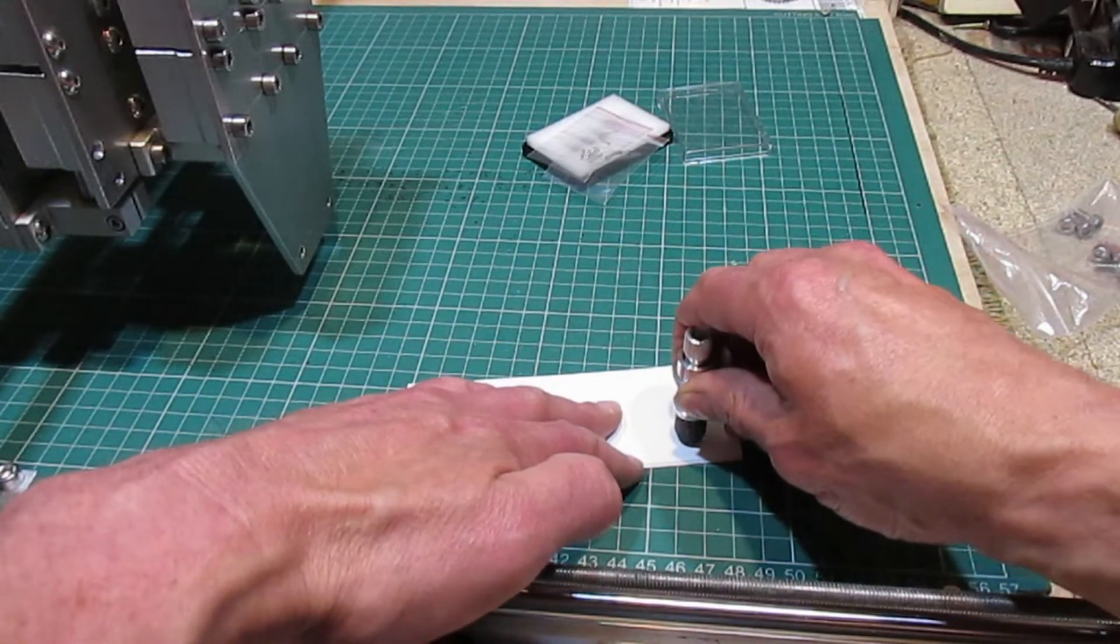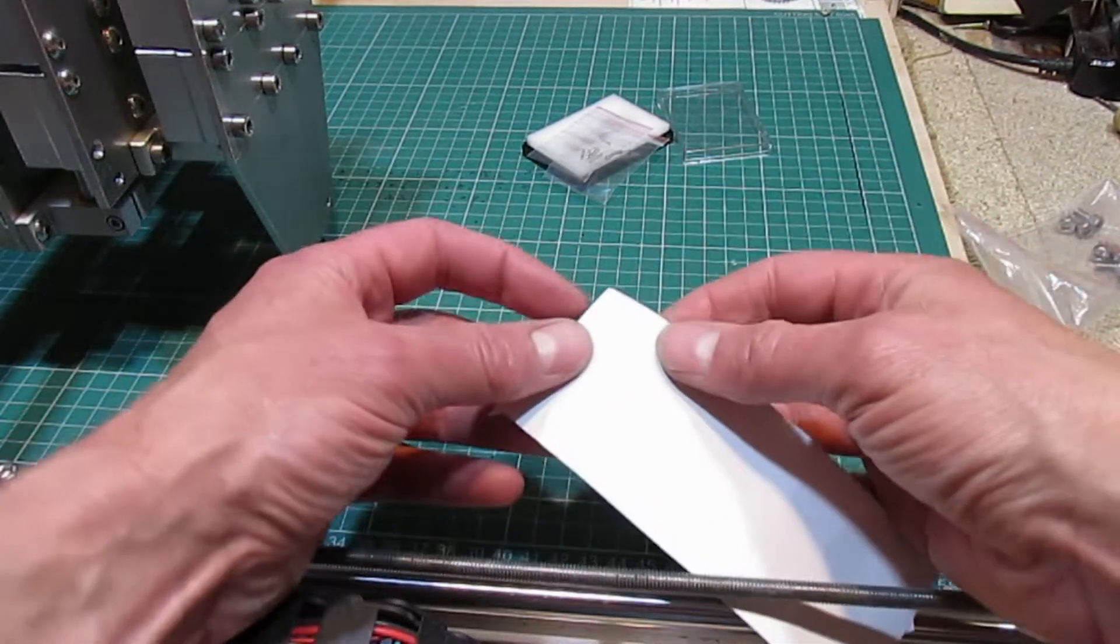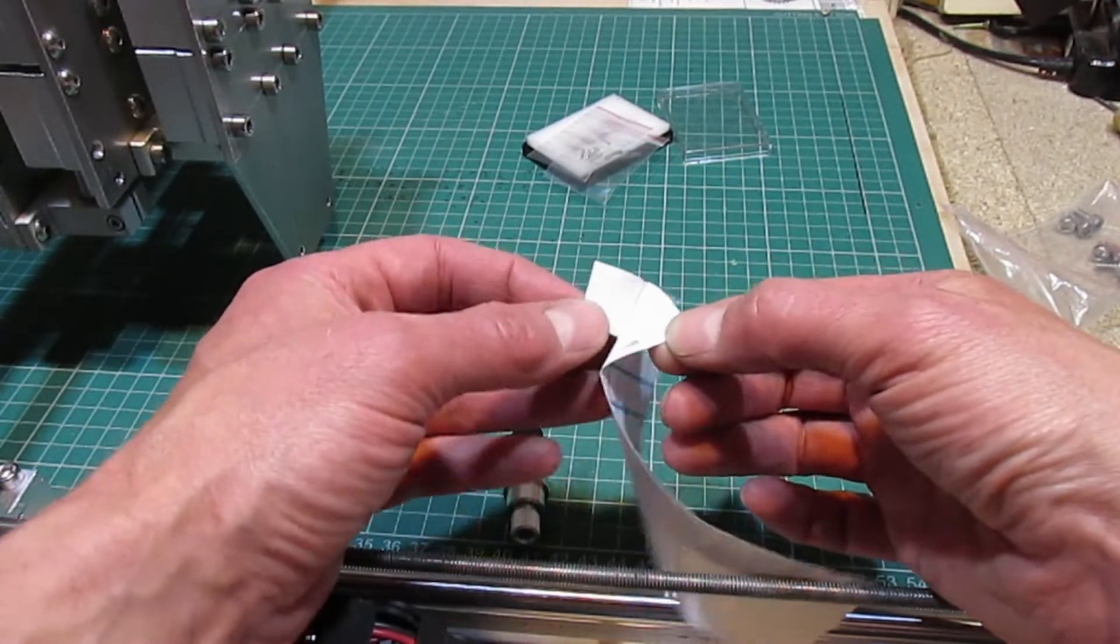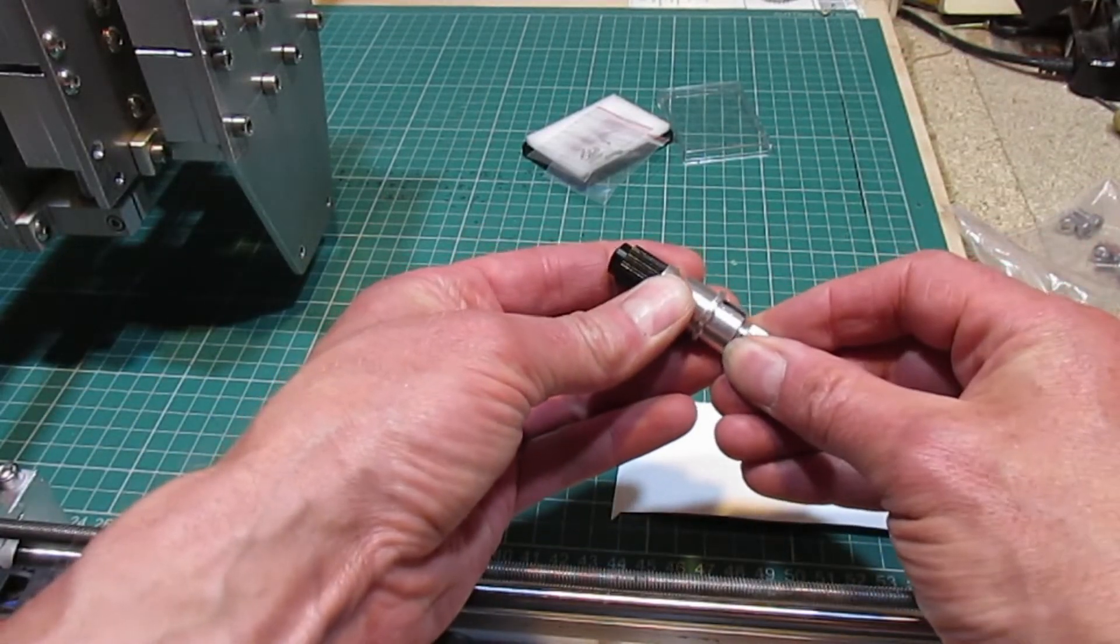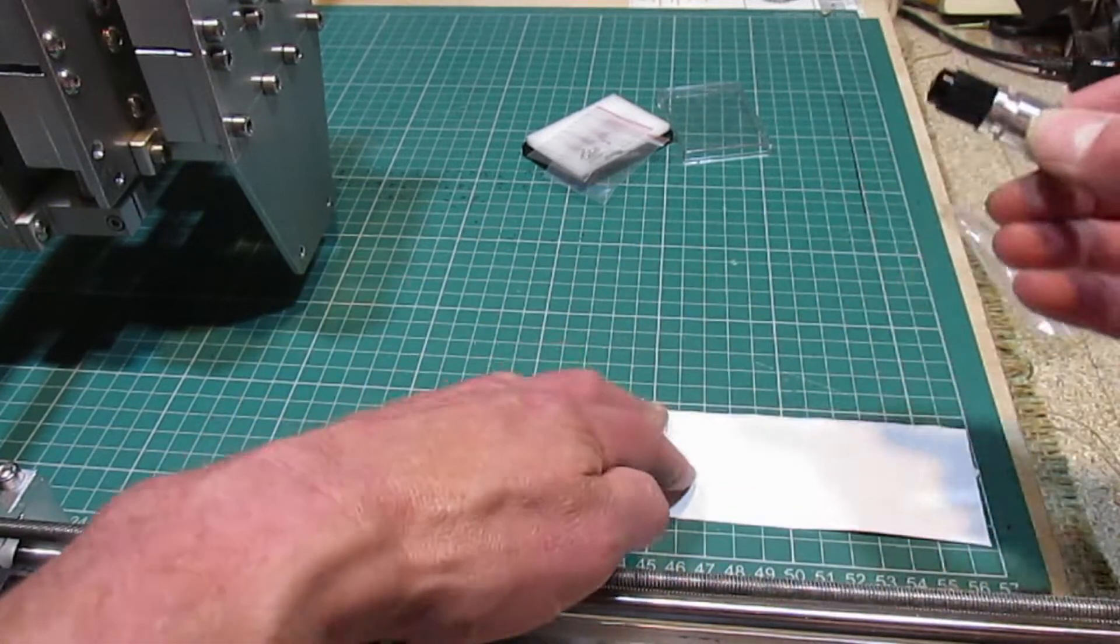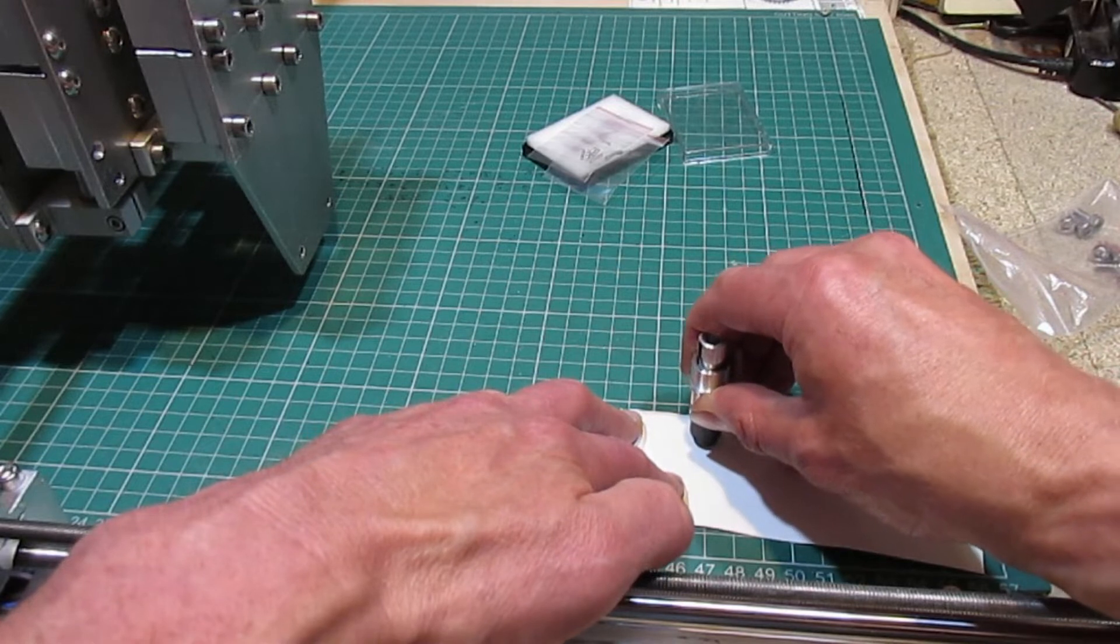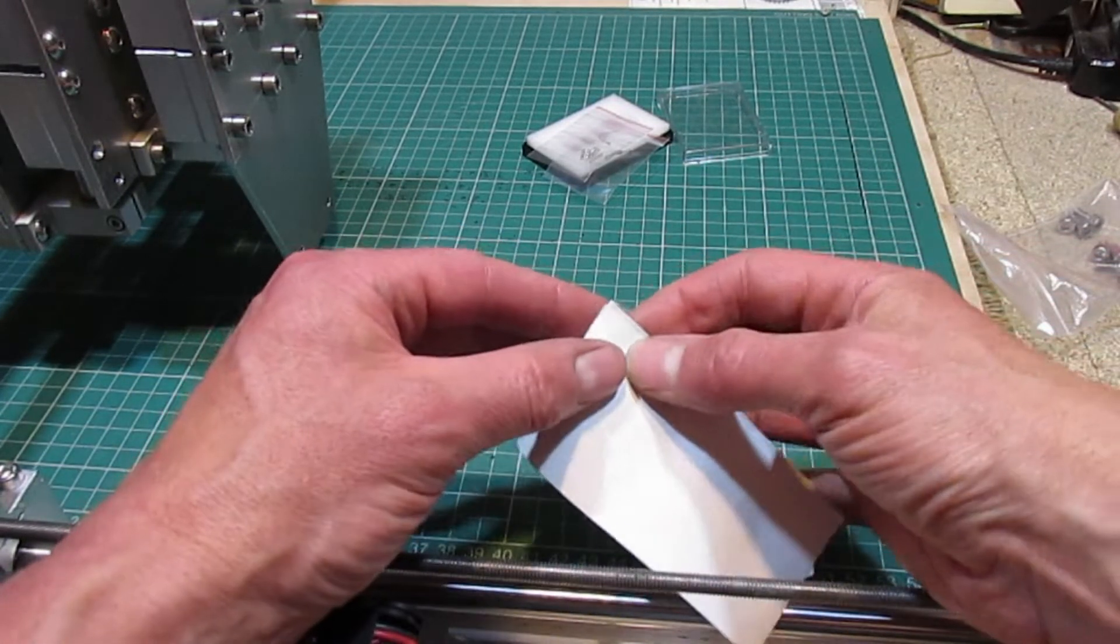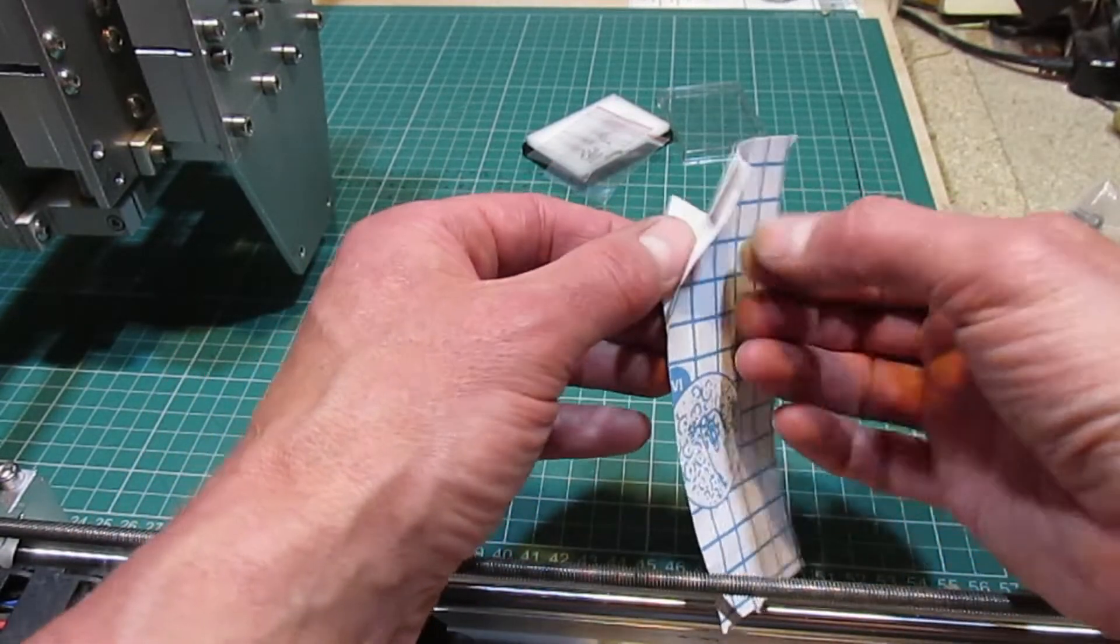Next find a scrap of vinyl and cut a short line to check the depth. Have a look to check it has gone through the vinyl but not through the backing paper. Re-adjust and try again if it's not correct. That seems better.